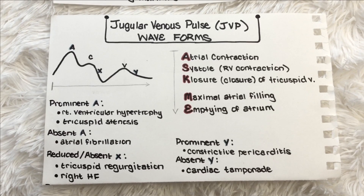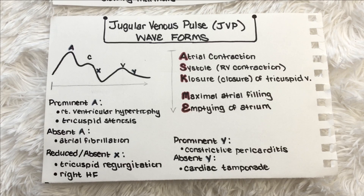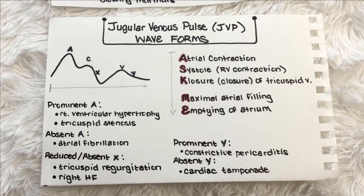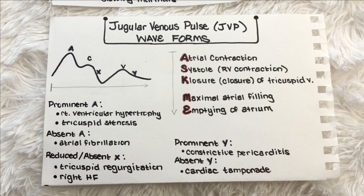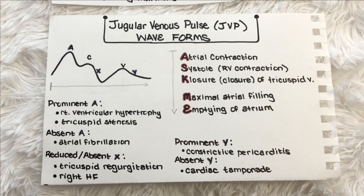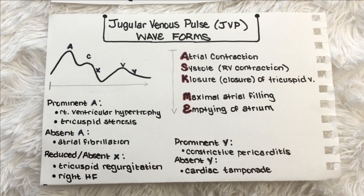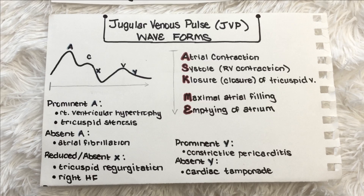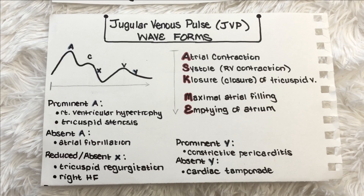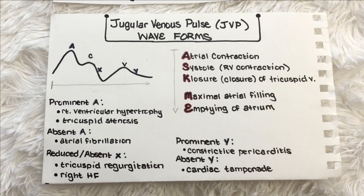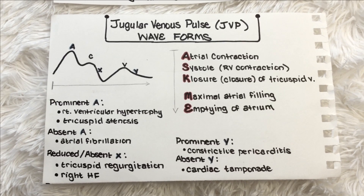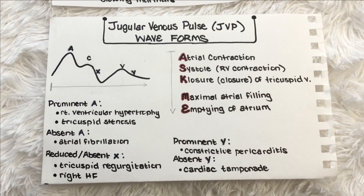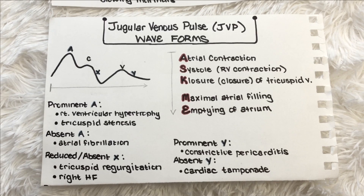For each of these phases I have the mnemonic ASKME: A representing the A wave for atrial contraction, S representing the C wave for systole or right ventricular contraction, K representing the X descent for closure of the tricuspid valve, M representing the V wave for maximal atrial filling, and E representing the Y descent for emptying of the atrium. A for A wave, S for C wave, K looks very similar to X for X descent, M for V wave, and E for emptying of the atria.